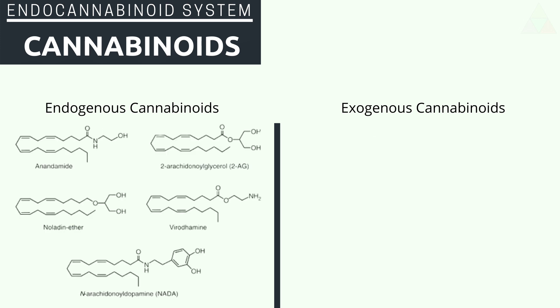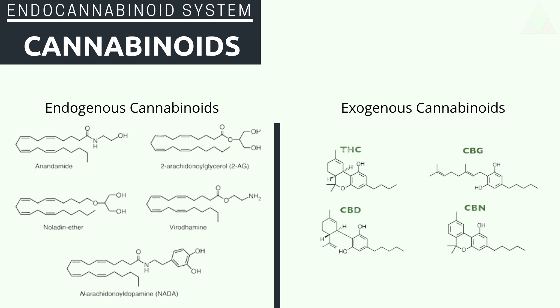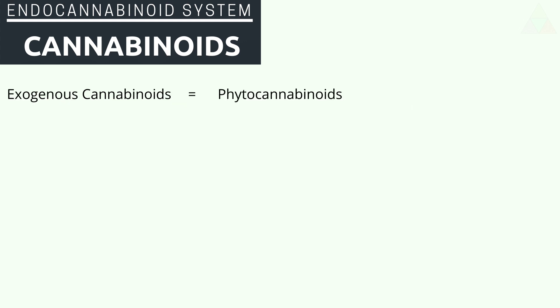Endogenous cannabinoids include anandamide, 2-AG, noladin ether, virodhamine, and NADA. Examples of exogenous cannabinoids we should be more familiar with are THC, CBD, CBN, and CBG. All of these examples of exogenous cannabinoids are also phytocannabinoids — phyto meaning it's from a plant.